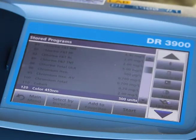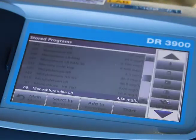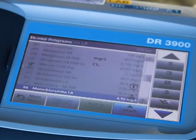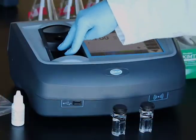Start your instrument and select the appropriate program for monochloramine measurement. Sample cells, adapters, and light shields will be indicated as appropriate by your instrument manufacturer.